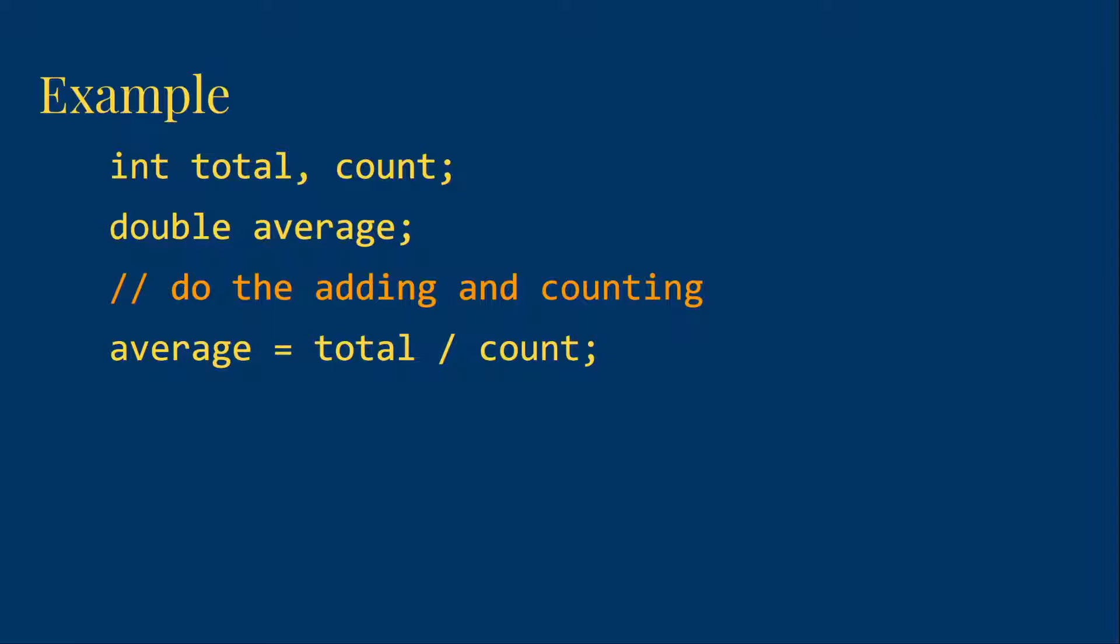Note that the fact that average is a double will have no impact on the division operation, because that's done well before we do the assignment. As long as the two operands when we do the division are integers, we're going to do integer division.